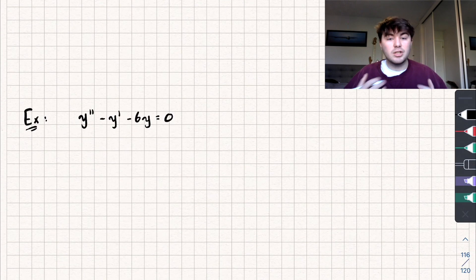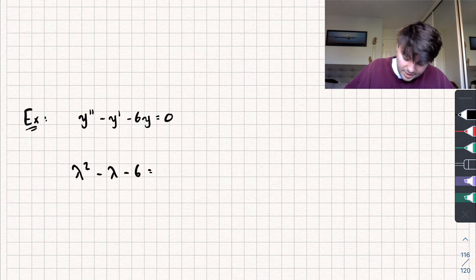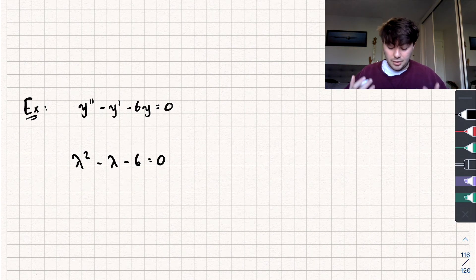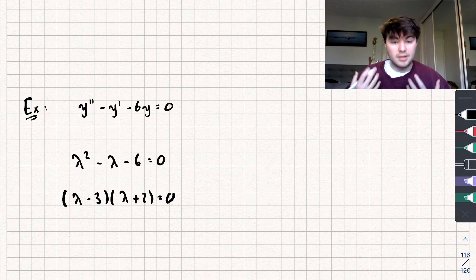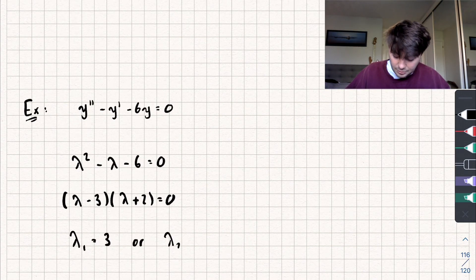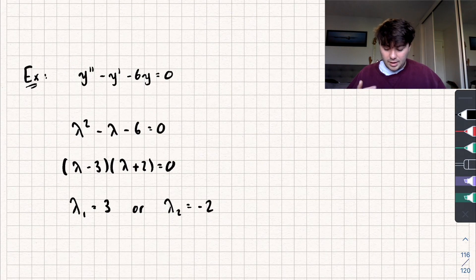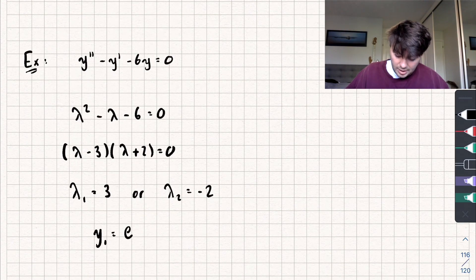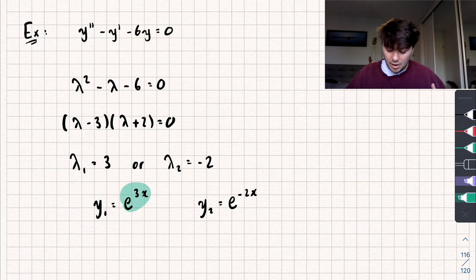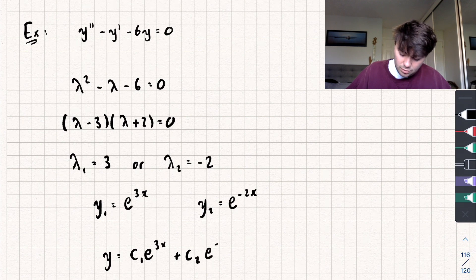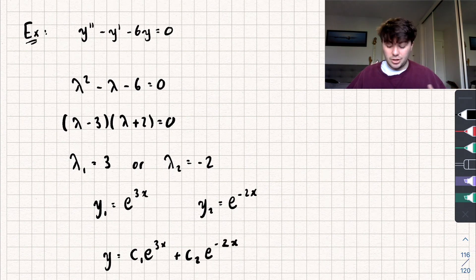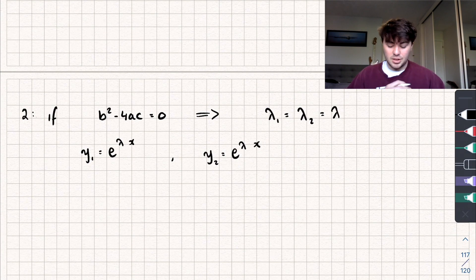Here's an example: given a differential equation, the auxiliary equation is λ² − λ − 6 = 0. Factorizing gives (λ − 3)(λ + 2) = 0, so λ₁ = 3 and λ₂ = −2. That gives us y₁ = e^(3x) and y₂ = e^(−2x), which are linearly independent. So the general solution is y = c₁e^(3x) + c₂e^(−2x).